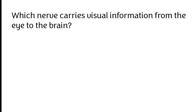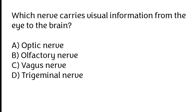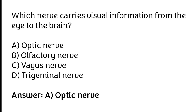Which nerve carries visual information from the eye to the brain? Optic nerve, olfactory nerve, vagus nerve, trigeminal nerve. The correct answer is option A — the optic nerve carries visual information from the eye to the brain.